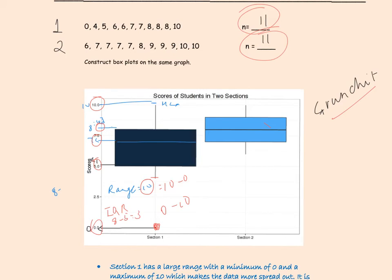For the first section: the minimum is 0, the lower quartile is 5, the median is 7, the upper quartile is 8, and the maximum is 10. The range of values is from 0 through 10, and the range of the data set is 10 minus 0, which is 10.